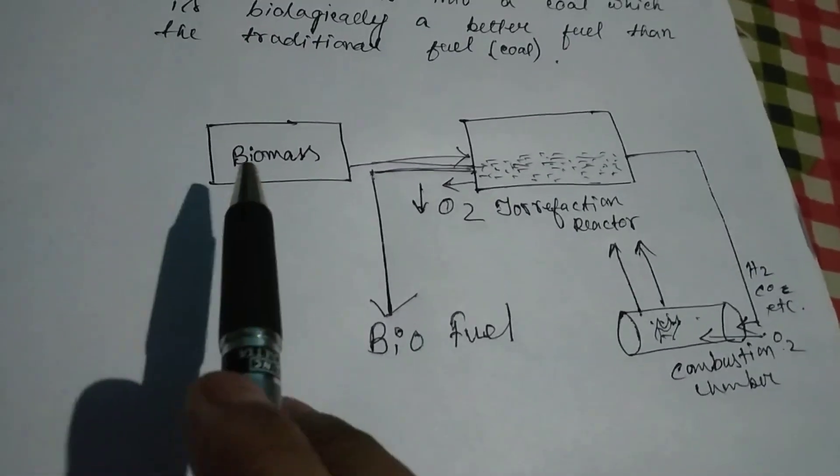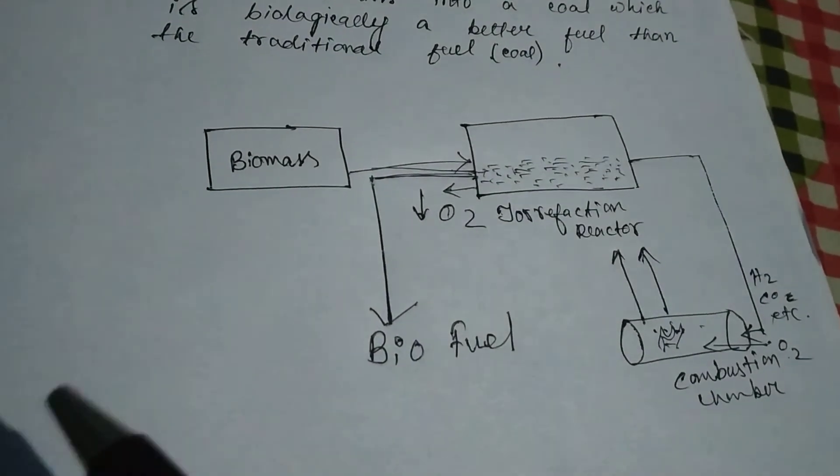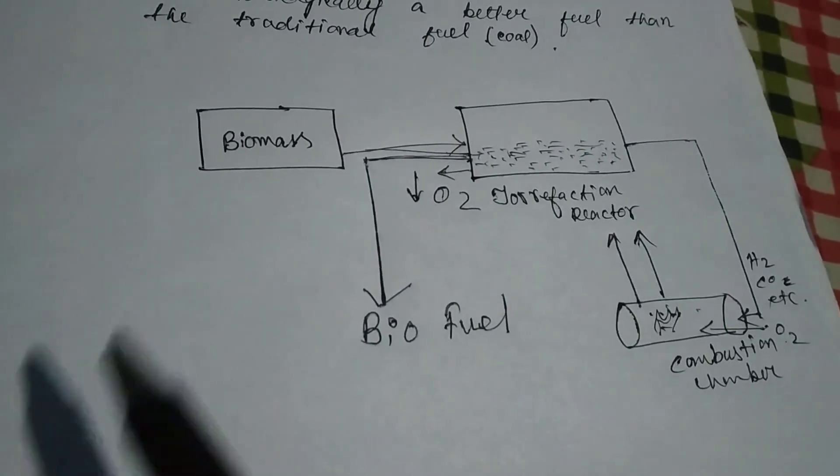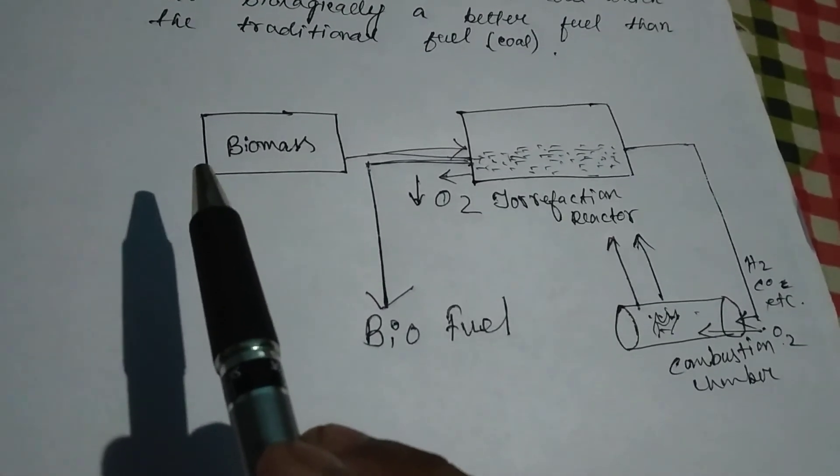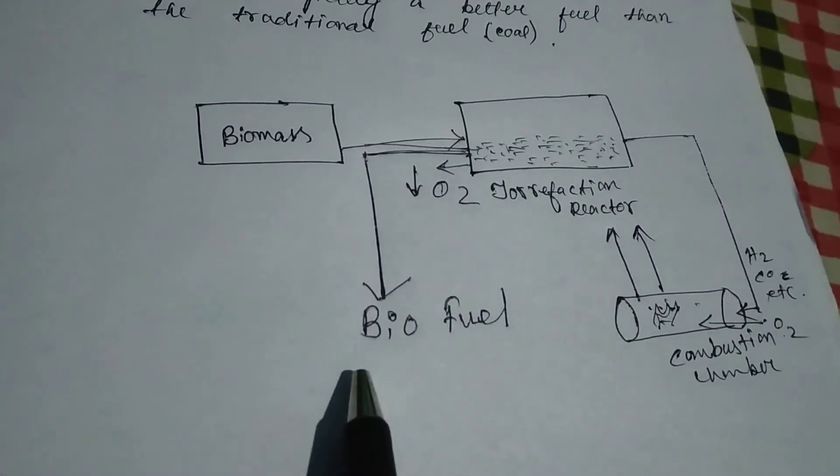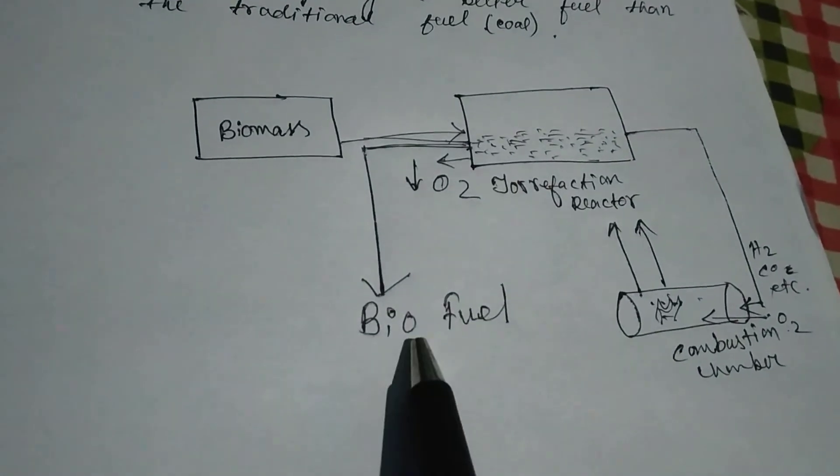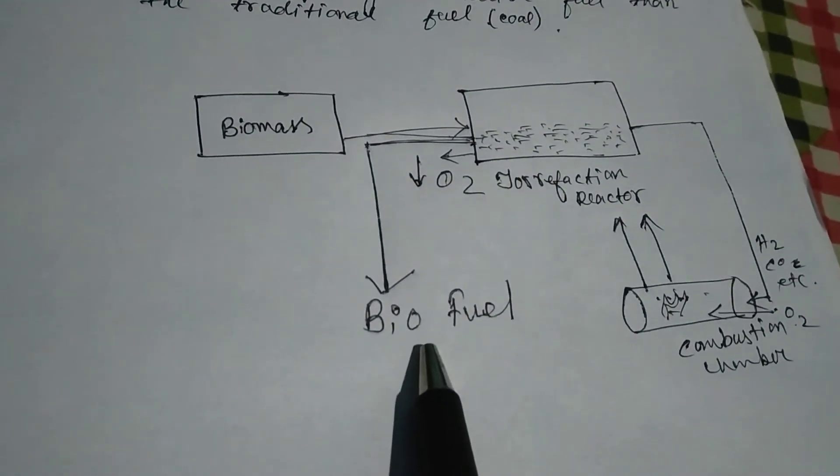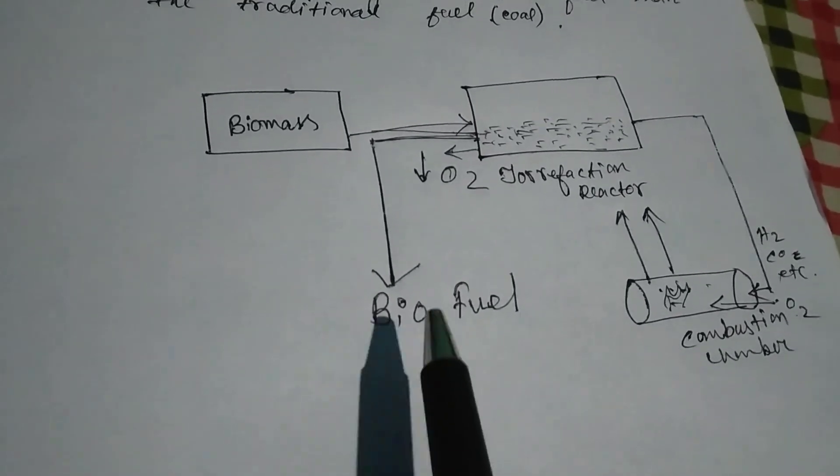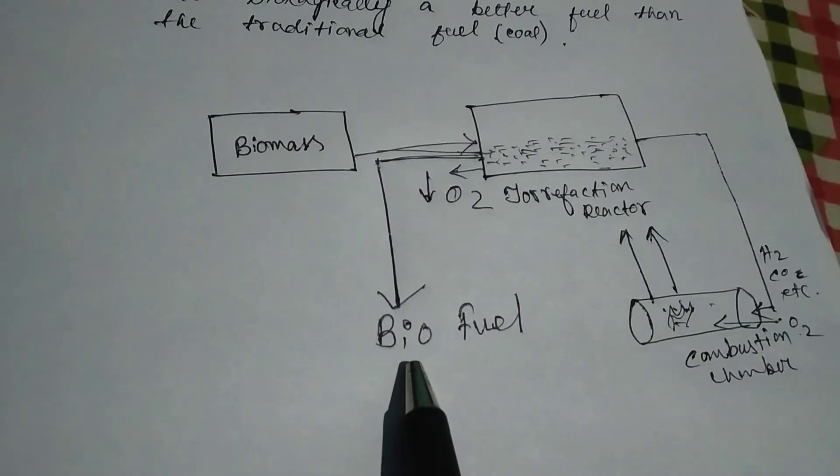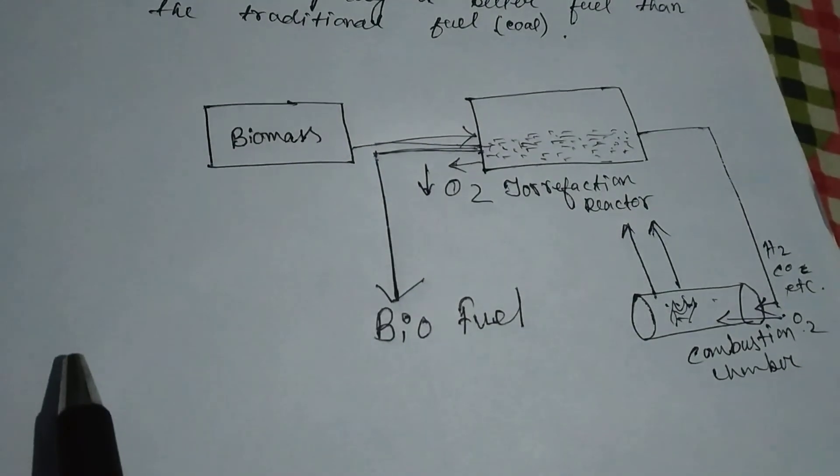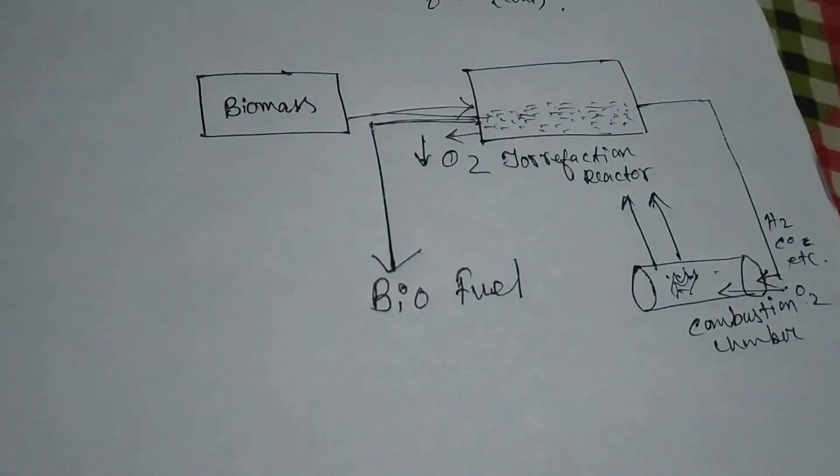This is the process of how normal biomass, which is unnecessarily burned by farmers and compensates in pollution, can be converted very easily by the pyrolysis process into a fuel which is biofuel. This fuel is very efficient and has a very high calorific value. This is the fuel that must be used everywhere by burning of this biomass. Thank you.